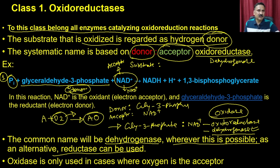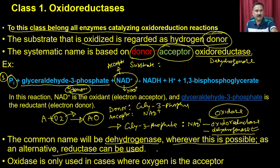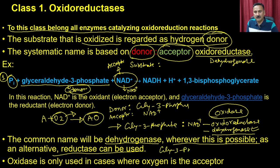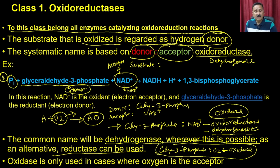We write 'oxidase' only when the reaction involves oxygen as the sole acceptor — i.e., A + O2 → product. If it involves both oxidation and reduction, we use 'dehydrogenase'. If it is only oxidation with oxygen as acceptor, we write 'oxidase'. For example, glyceraldehyde-3-phosphate + O2 → product would be named glyceraldehyde-3-phosphate:O2 oxidase.